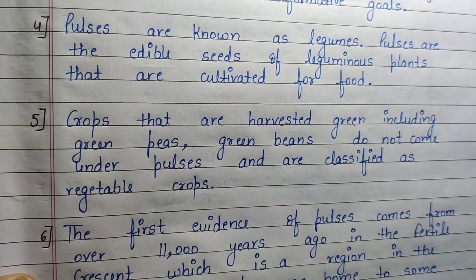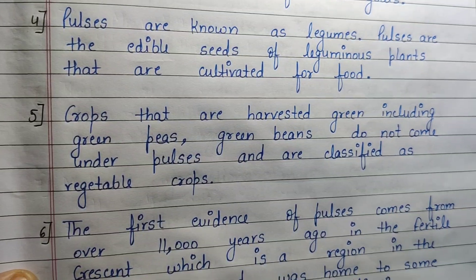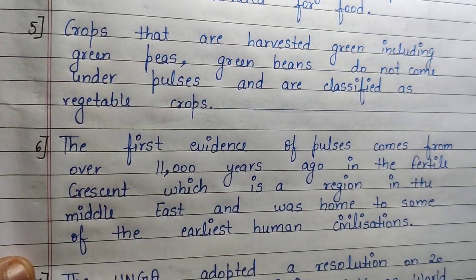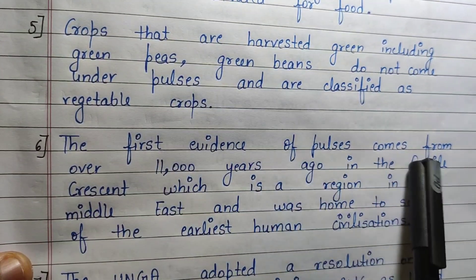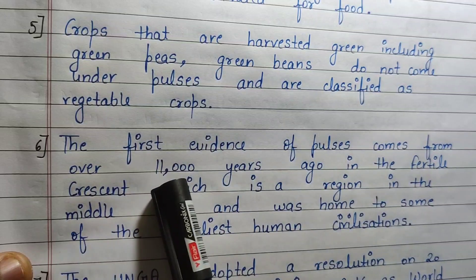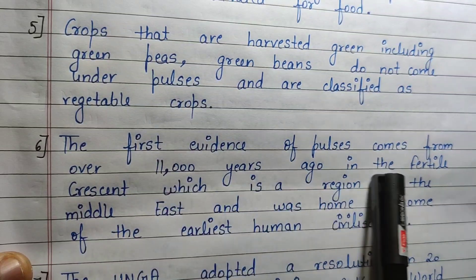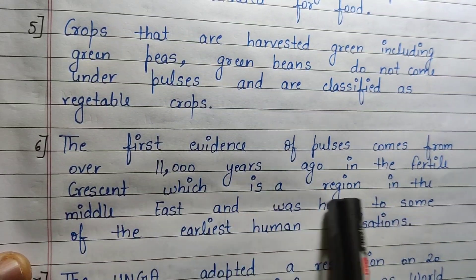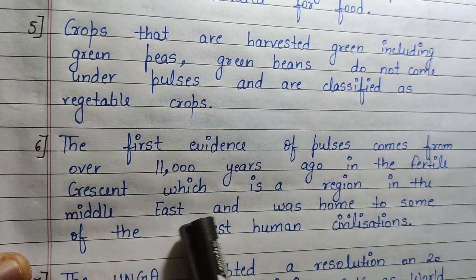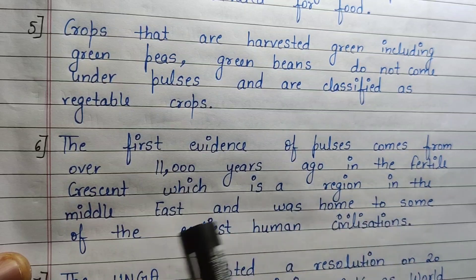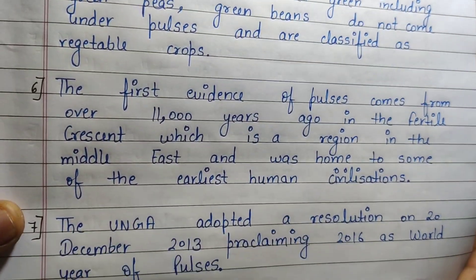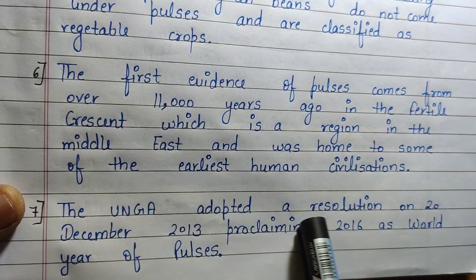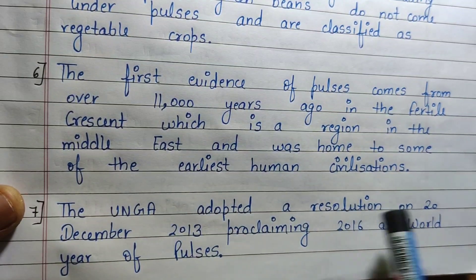The first evidence of pulses comes from over 11,000 years ago in the Fertile Crescent, which is a region in the Middle East and was home to some of the earliest human civilizations.